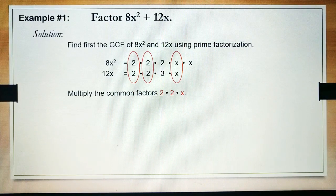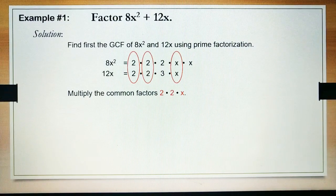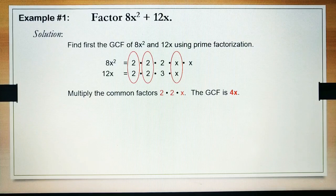So, we will multiply the common factors 2 times 2 times x to find the GCF. And the GCF is 4x.